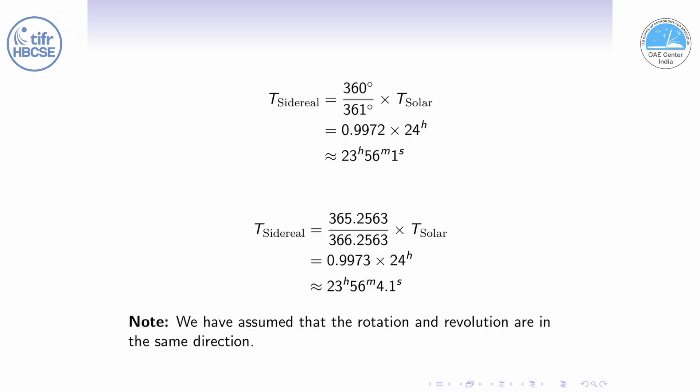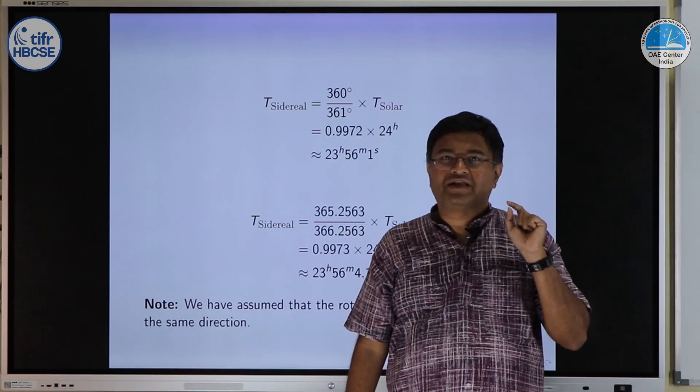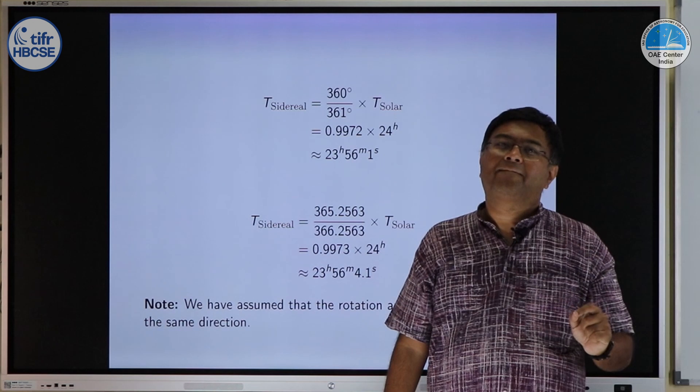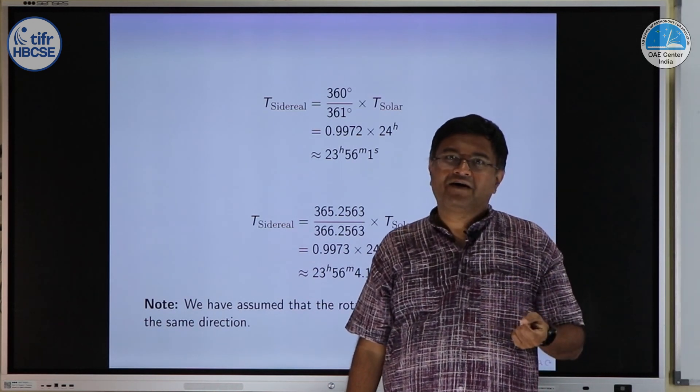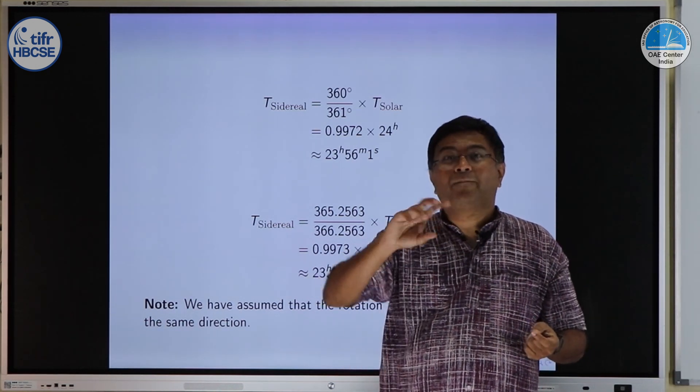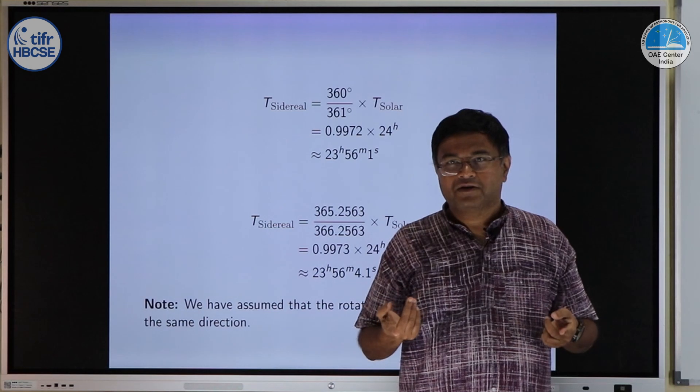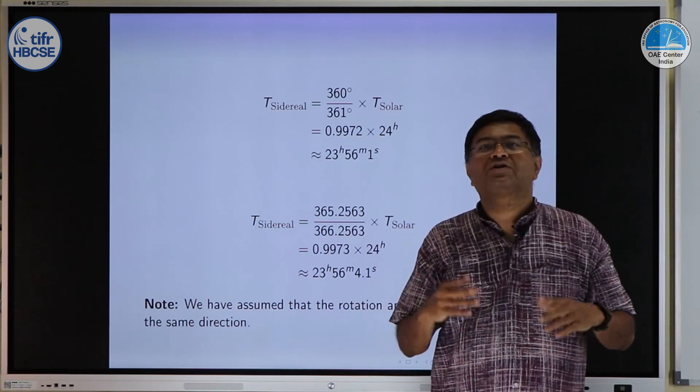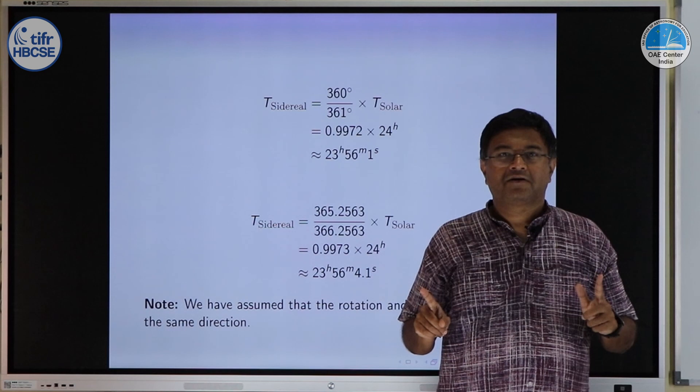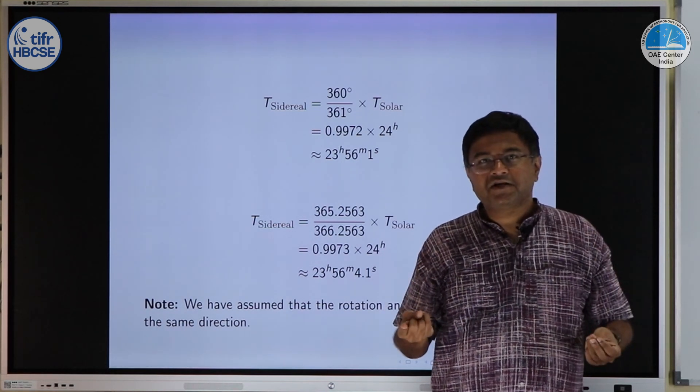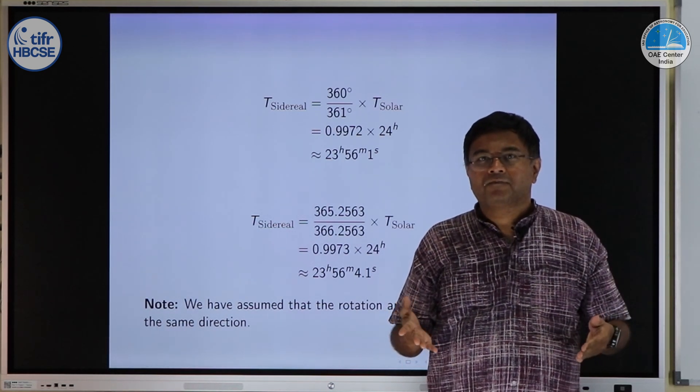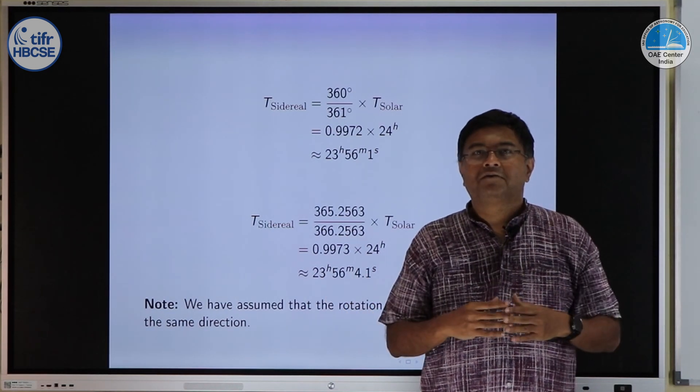In this, please remember we have assumed and which is actually true that earth's rotation and revolution both are happening in same direction. At the close of this video, I want you to think about what will happen, what would have happened if earth's rotation was in the opposite direction. How the sidereal day would have changed and how solar day would have changed? Would they change or would they not change? Think about this and if they are changing, what would be the new length? Calculate and do share your answer.